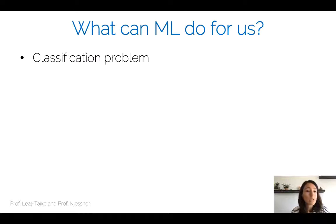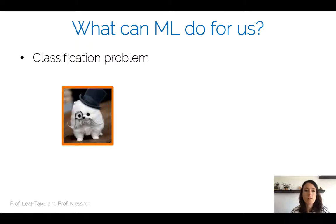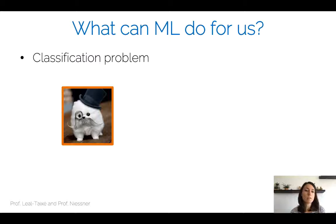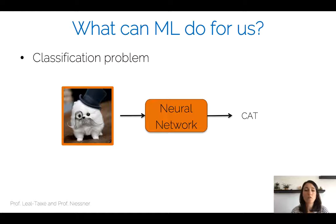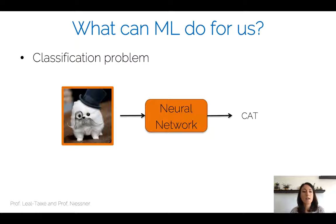Machine learning is really good for classification problems, and we have seen the standard problem in computer vision: image classification. You have as input an image — for example, an image showing a cat — you pass it through a neural network, and the network gives you the label 'cat'. This is a classification problem: there is a fixed number of classes for which we train the neural network, and at test time the network picks one of these classes as output.